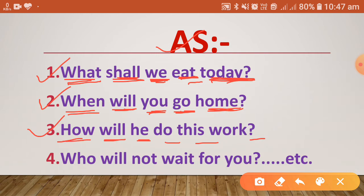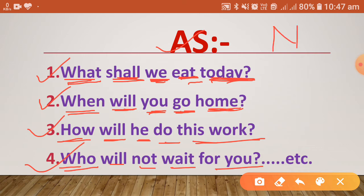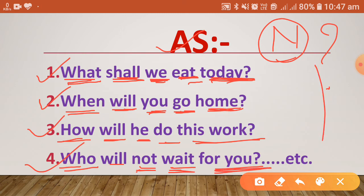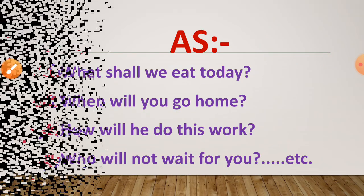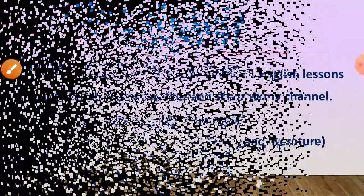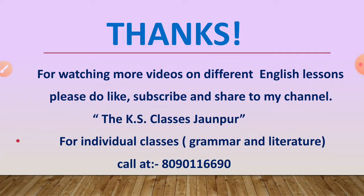Next: 'How will he do this work?' — 'how' is the question word, 'will' is the helping verb, 'he' is the subject, and 'do' is the main verb. Next: 'Who will not wait for you?' — 'who' is the question word; since the question is asked about the subject, there is no separate subject, so 'not' comes directly after the helping verb, then the first form. These are all WH question sentences using the WH question structure.